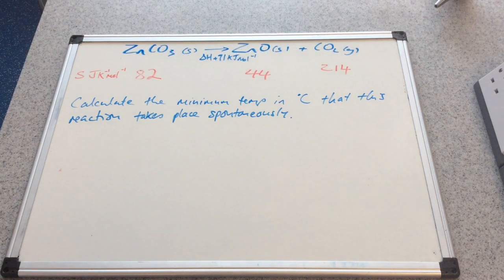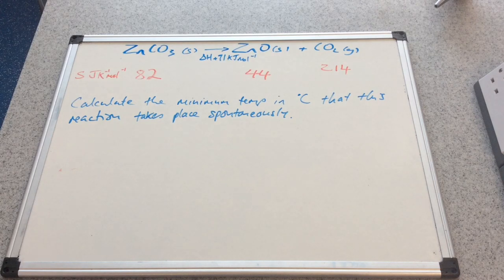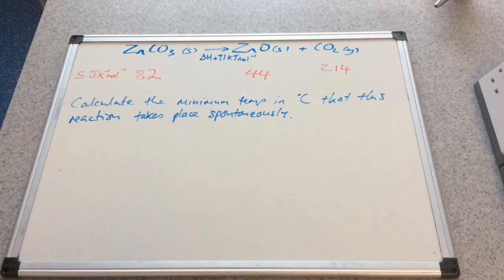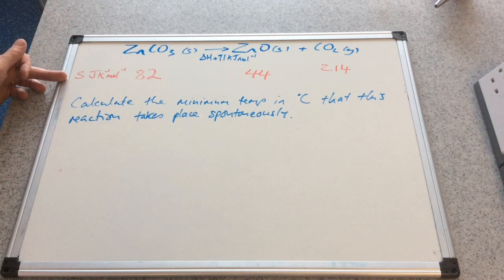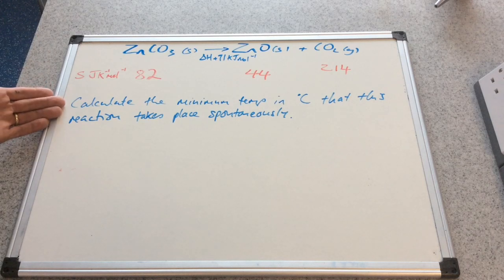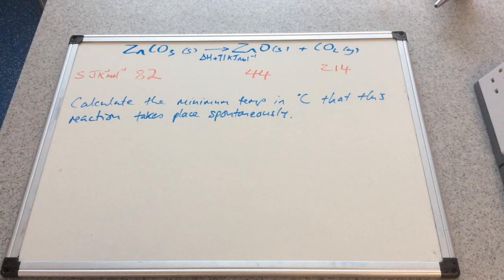We'll go for one more. We've got thermal decomposition of zinc carbonate. Delta H is plus 71 kilojoules per mole. There's your entropy values in red. Same as before, calculate the minimum temperature in degrees C that this reaction will take place spontaneously.